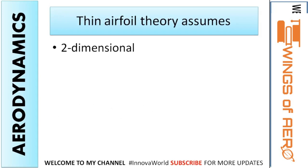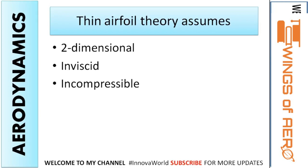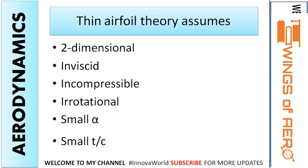Here are a few assumptions for thin airfoil theory. We consider a two-dimensional flow. Inviscid means there is no viscosity in the fluid. Incompressible flow denotes that the density is constant. Irrotational flow means there is no angular movement occurring in the flow. We also assume a small angle of attack, and the thickness-to-chord ratio of the airfoil is considered to be very small.